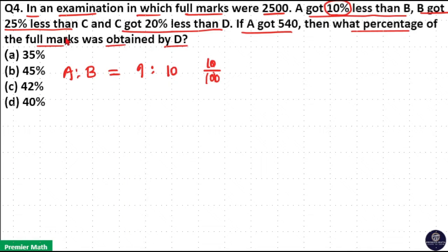Again, B got 25% less than C. So 25% means 25 by 100. I will write here 25 goes 4 times in 100, so I will write it as 1 by 4. So B is to C ratio is - if C got 4 marks, then B got 1 less than C, that is 3 marks.